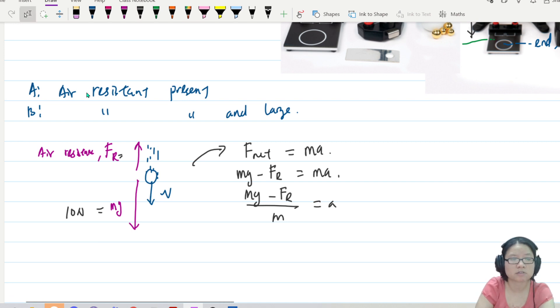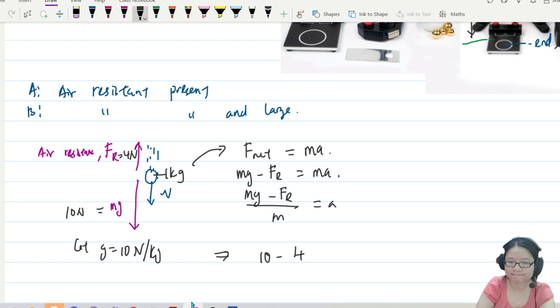So from here, you will have MG minus air resistance is equal to MA. If you cannot put numbers inside, put numbers to help your brain. Maybe this is 10N, maybe this is 4N. So if there is air resistance, then what will happen here is this will be 10 minus 4. And to make my life easy, I put this one as 1kg. I don't use 9.81, I use 10. Let G be equal to 10N per kg. So this one is 10N. So this one will divide by 1. So now your A is 6m per second squared.